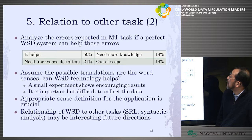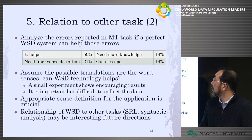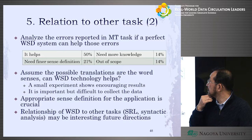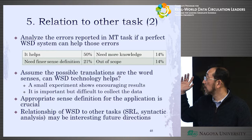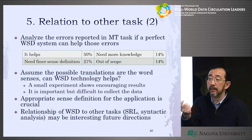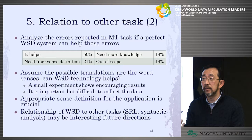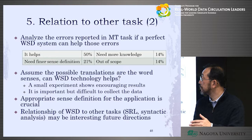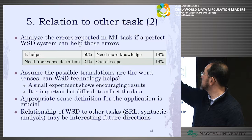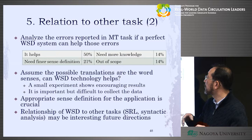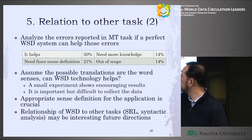The word sense disambiguation group also analyzed how much a word sense disambiguation system can help machine translation. In machine translation, word sense is important — for 'bank,' you need to know if it means financial institute or riverbank, because the Japanese translation differs. They found that a perfect word sense disambiguation system would help 50% of translation errors. That's encouraging.